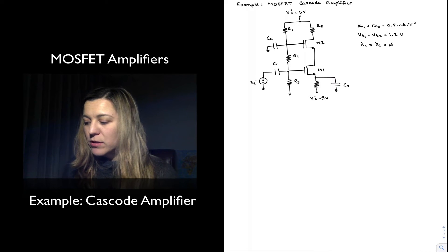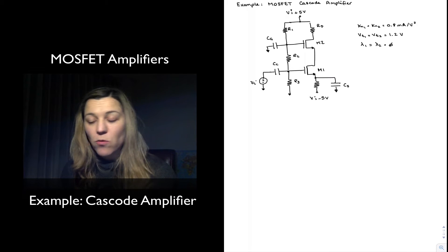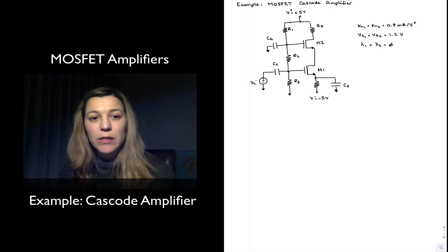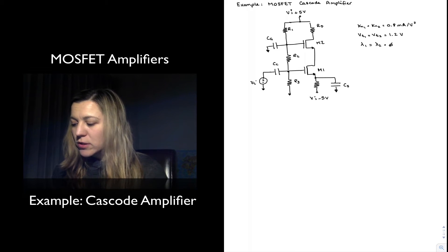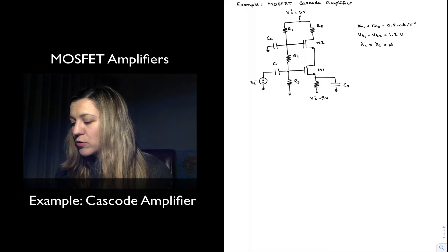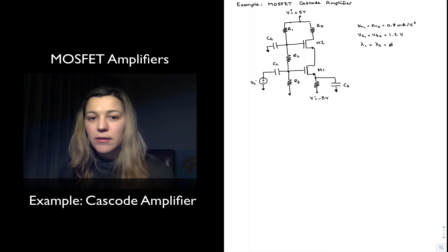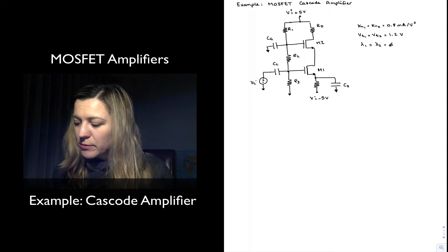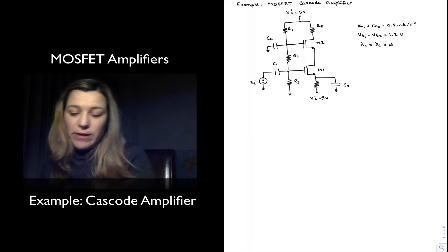I have written the different parameters — process parameters: KN1 equals KN2, which is 0.8 mA per volt squared. The threshold voltages VT1 is also equal to VT2, and they are 1.2 volts. And finally the lambdas are equal to zero, which essentially means that we are neglecting channel length modulation effects.